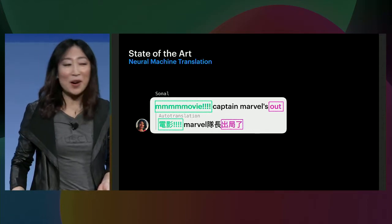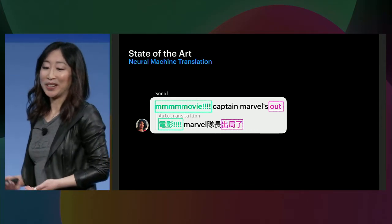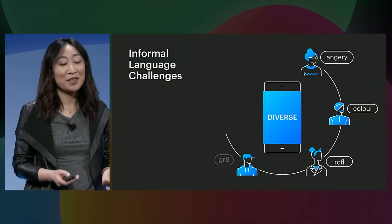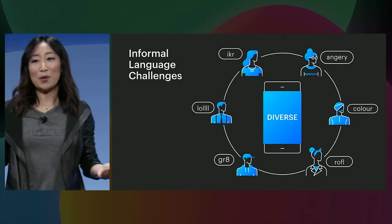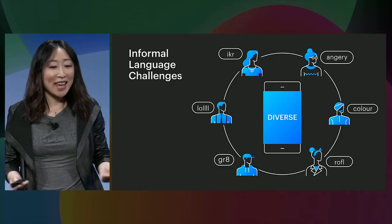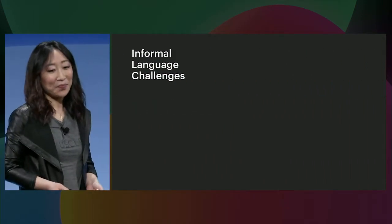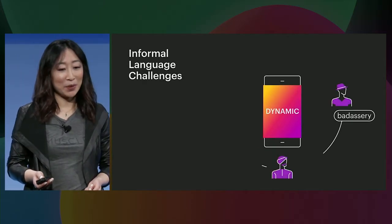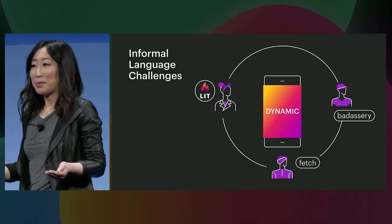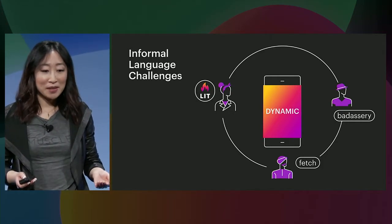So why is conversational language so hard? What are the challenges we're dealing with? First, language — especially informal language — is very diverse. There are more than one way to write 'color,' to express laughing out very loudly, or to express anger. Second, language on Facebook is very dynamic. There are new words and new concepts coming out every day, and they become viral way before we can adapt our systems.